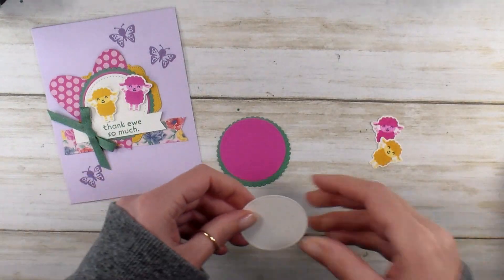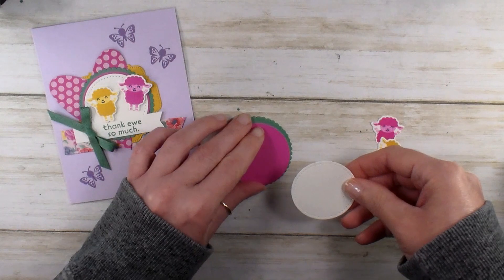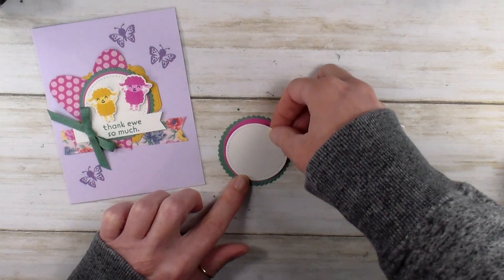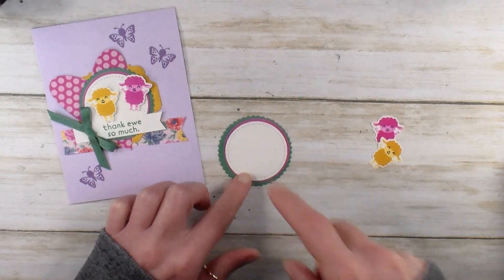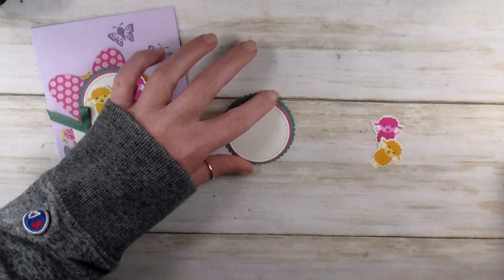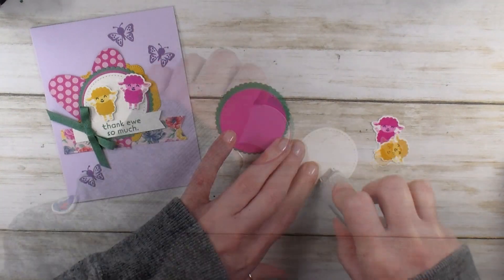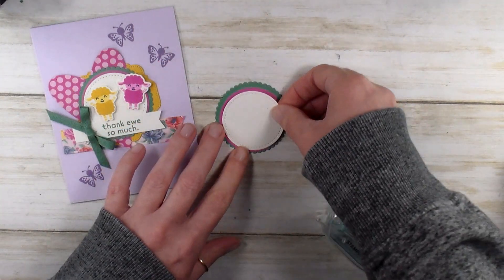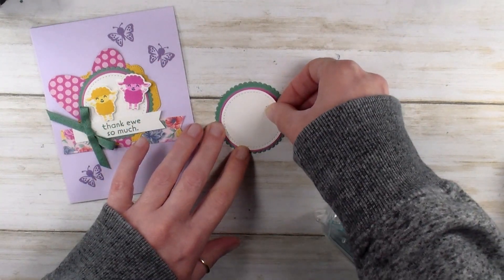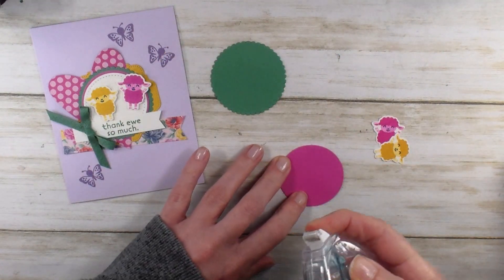And then for our top layer, I've got a piece of Whisper White. And it's cut with the stitched shapes. This is the one and seven eighth inch stitched circle. And they make a really awesome set of layers. Let's go ahead and glue all those guys together. Just using my dry adhesive and centering these three right on top of each other.